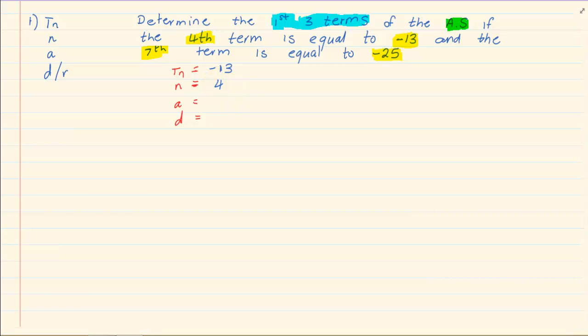Now we are going to rewrite TN, N, A and D, and we are now going to fill in the same information for the seventh term. So when we are talking of the seventh term, we know it is equal to minus 25. So the first rule is always to fill in your TN, N, A and D or R.